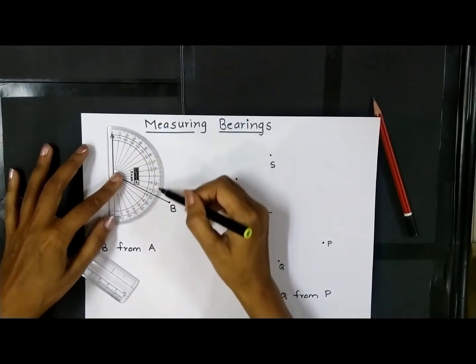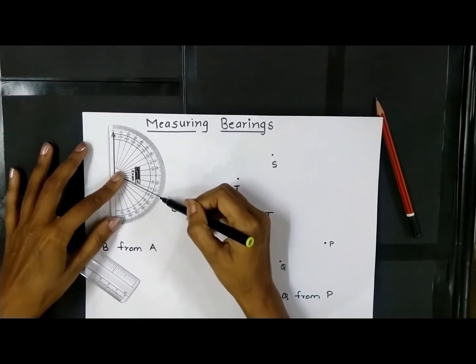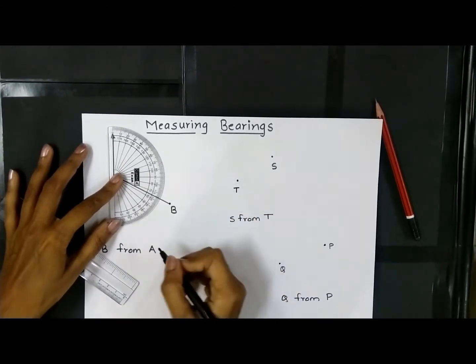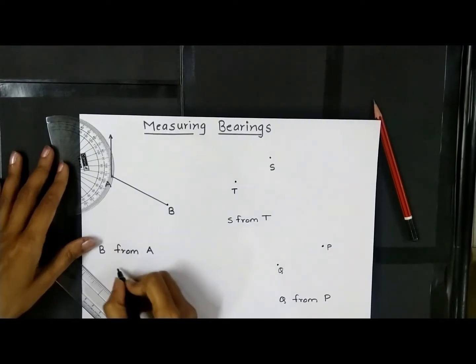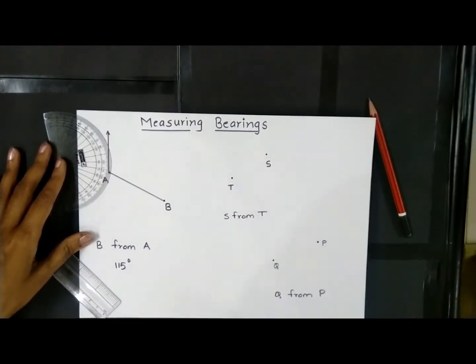Then measure this angle. So here clearly 115 degrees. So I will write the bearing here as 115 degrees.